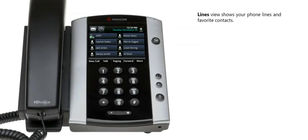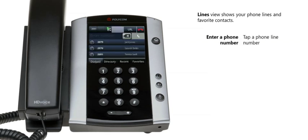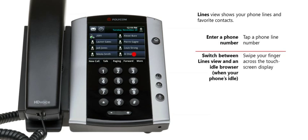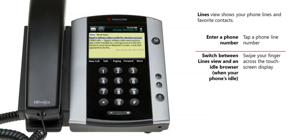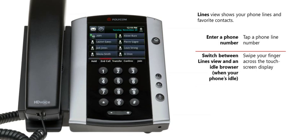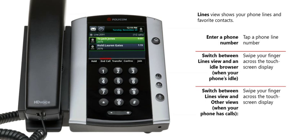Lines view, the default display on your phone, shows your phone lines, favorite contacts, and soft keys for performing phone tasks. When your phone is idle, that is, there are no active calls, you can tap a phone line number to show the dialer so you can enter a phone number. Or you can go to an idle browser, if it's set up on your phone, by swiping your finger across the touch screen display. When your phone has calls, you can swipe your finger across the touch screen display to display calls or active call view. Note that your administrator can change the default view that displays on your phone, so for example, the home view could automatically display instead of lines view.